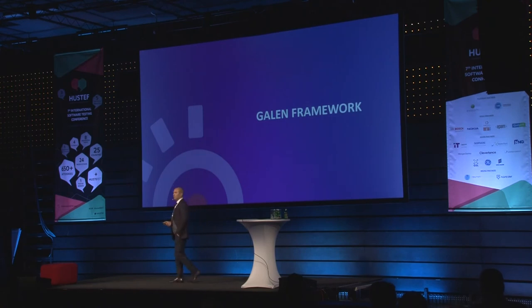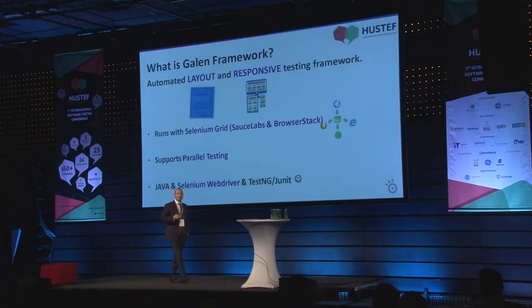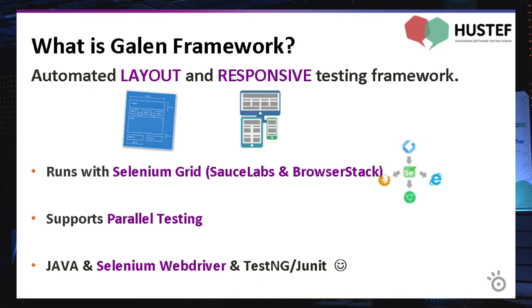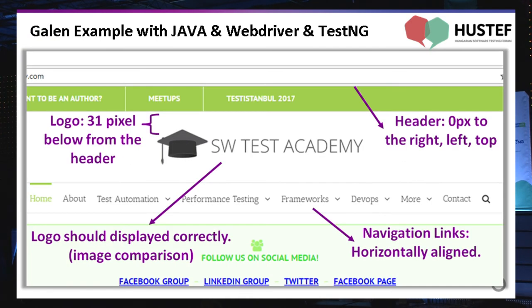The second tool is Galen Framework, written by Ivan Shubin. It's an automated layout and responsive testing framework. You can test your layout and the location of your elements using Galen. It runs with Selenium Grid and you can do parallel testing. It also supports Java, Selenium WebDriver, TestNG, and JUnit. In this example, the logo should display 31 pixels below the header, and the header must be located 0 pixels to the right, left, and top. Our logo should display correctly. You can also do image comparison using Galen Framework, and all navigation links should be horizontally aligned.